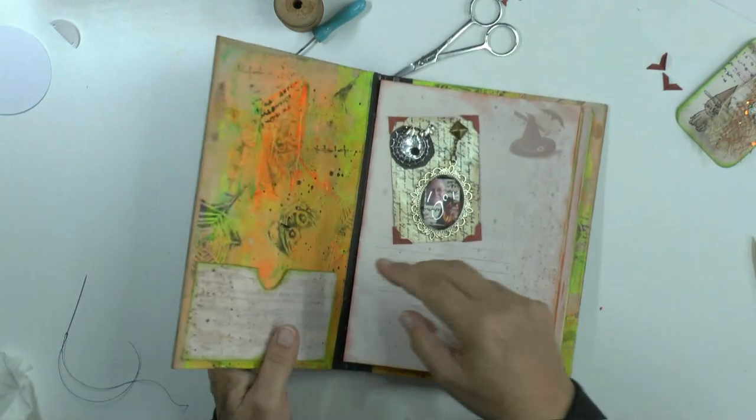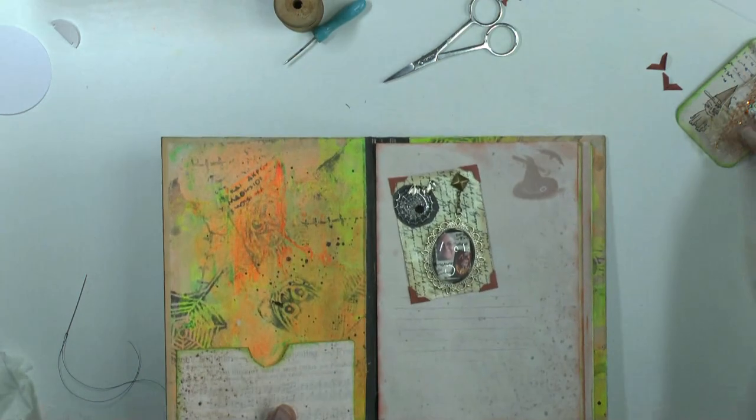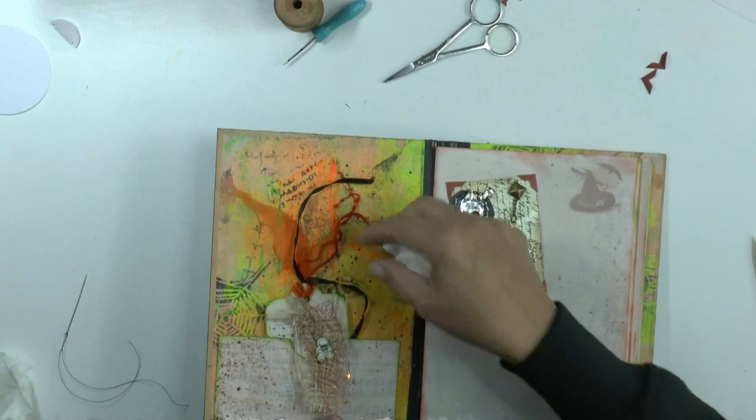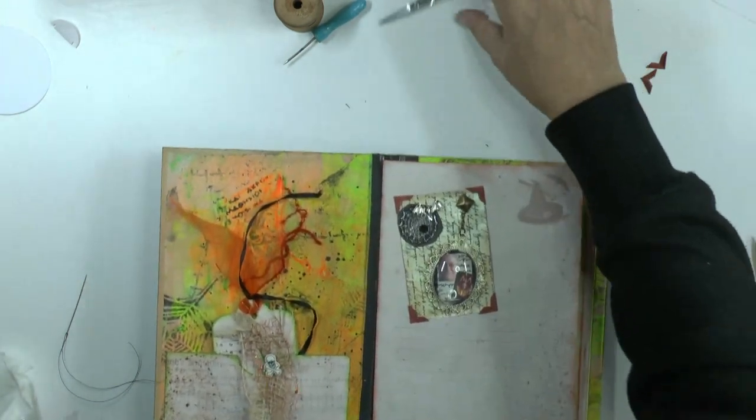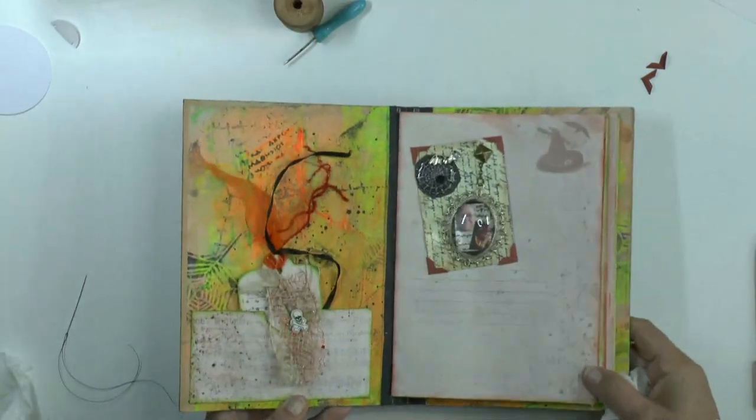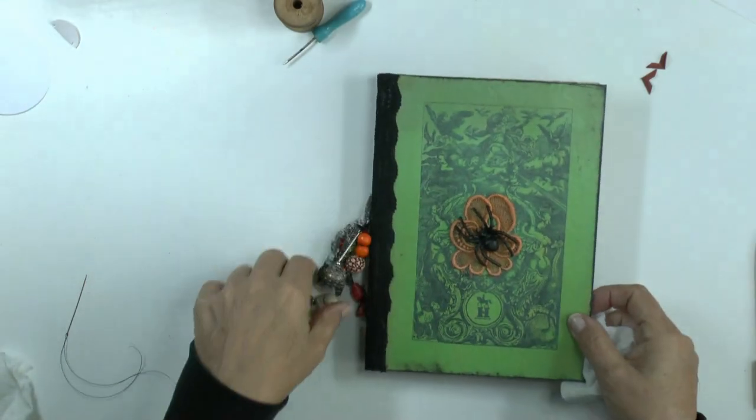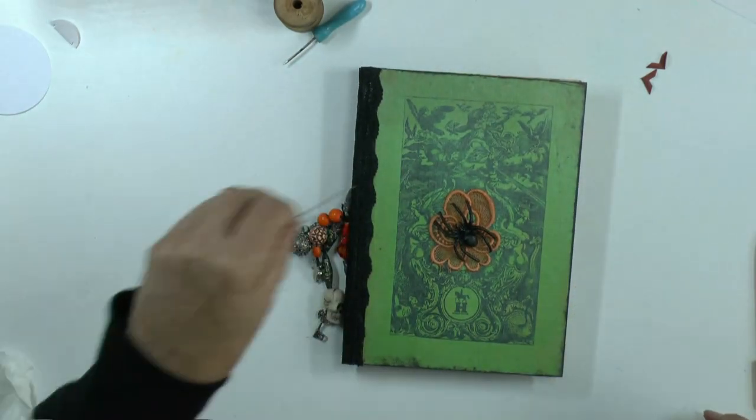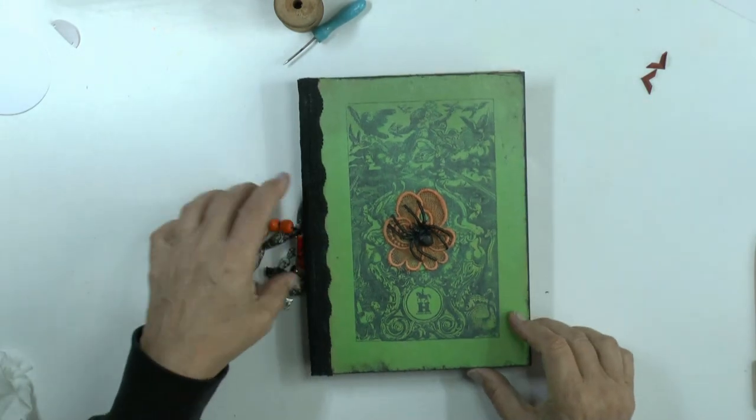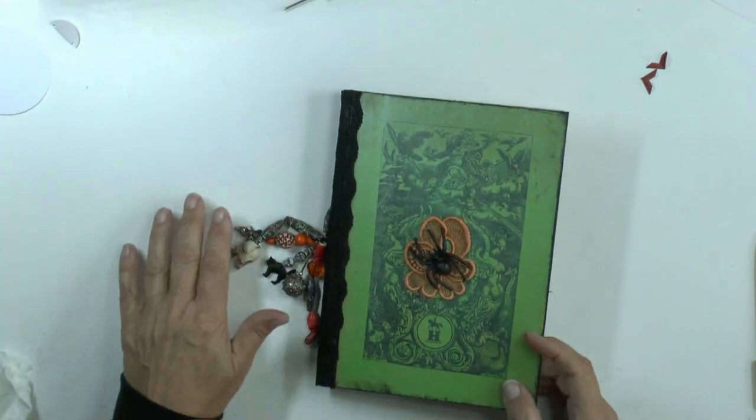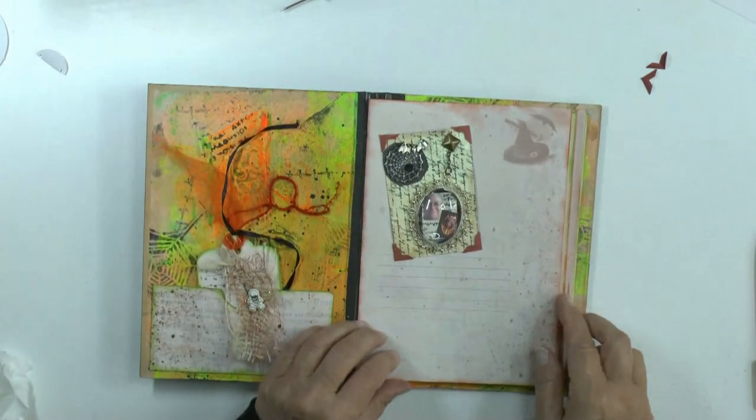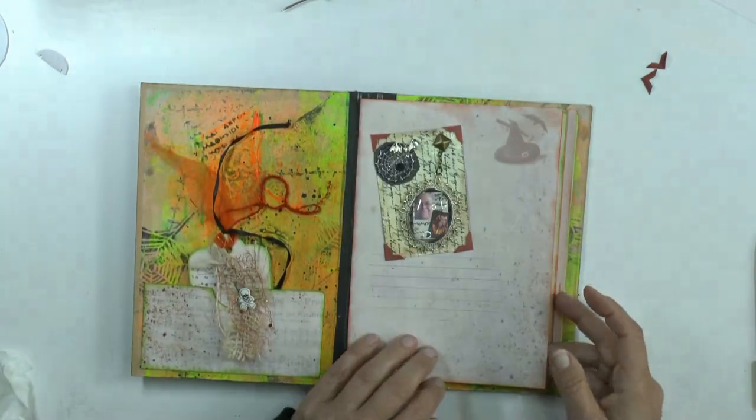And this is glued on. And I will stick a tag again in the pocket. I like those folded corners. I will make some more for the other ATCs.